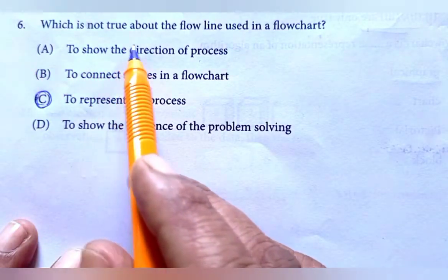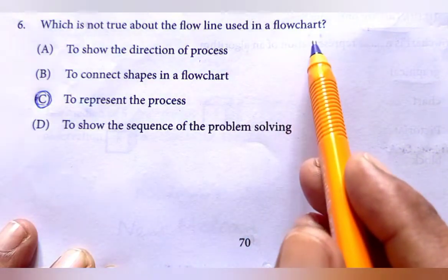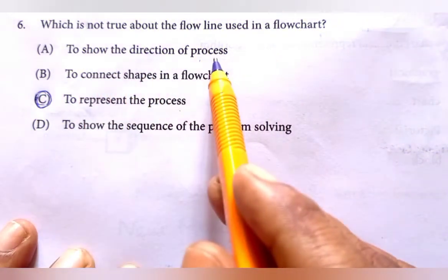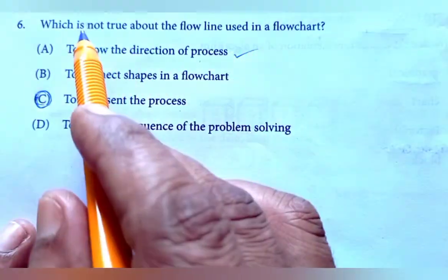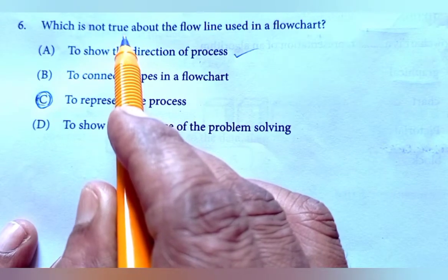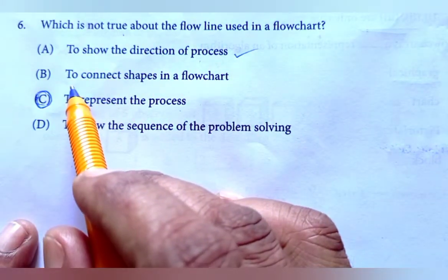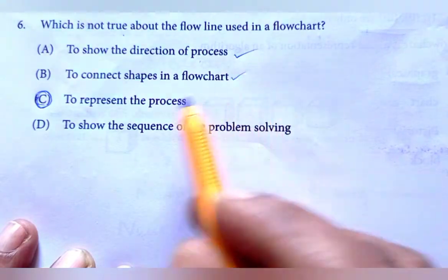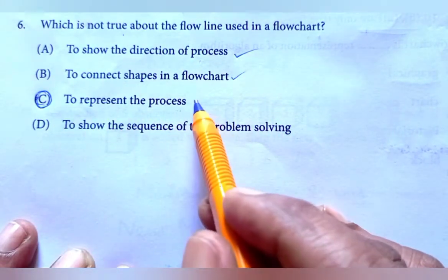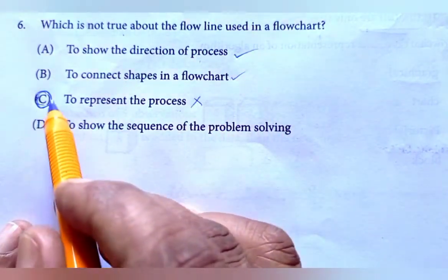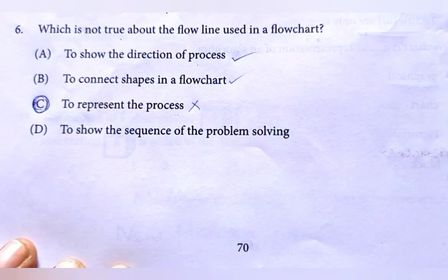Sixth question: which is not true about the flowchart used in a flowchart? To show the direction of process, adding in the true. Now, we have not true. Since false, we have found that B, to connect shapes in flowchart also, it is right. To represent the process, adding in the wrong statement. So, this C option is the right answer for the sixth question.